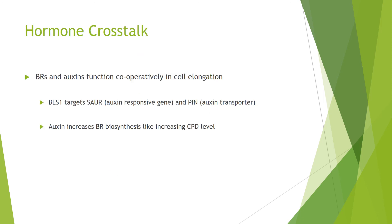When it comes to hormones, cross-talk is really important. The main example here is brassinosteroids and auxins, which function cooperatively in cell elongation. BES1 targets auxin response genes and also PIN, which is an auxin efflux transporter. In addition, auxin will actually increase brassinosteroid biosynthesis by increasing transcript levels of the CPD gene, which encodes a cytochrome P450-dependent monooxygenase — all contributing to cell elongation, one of the key biological functions of brassinosteroids.